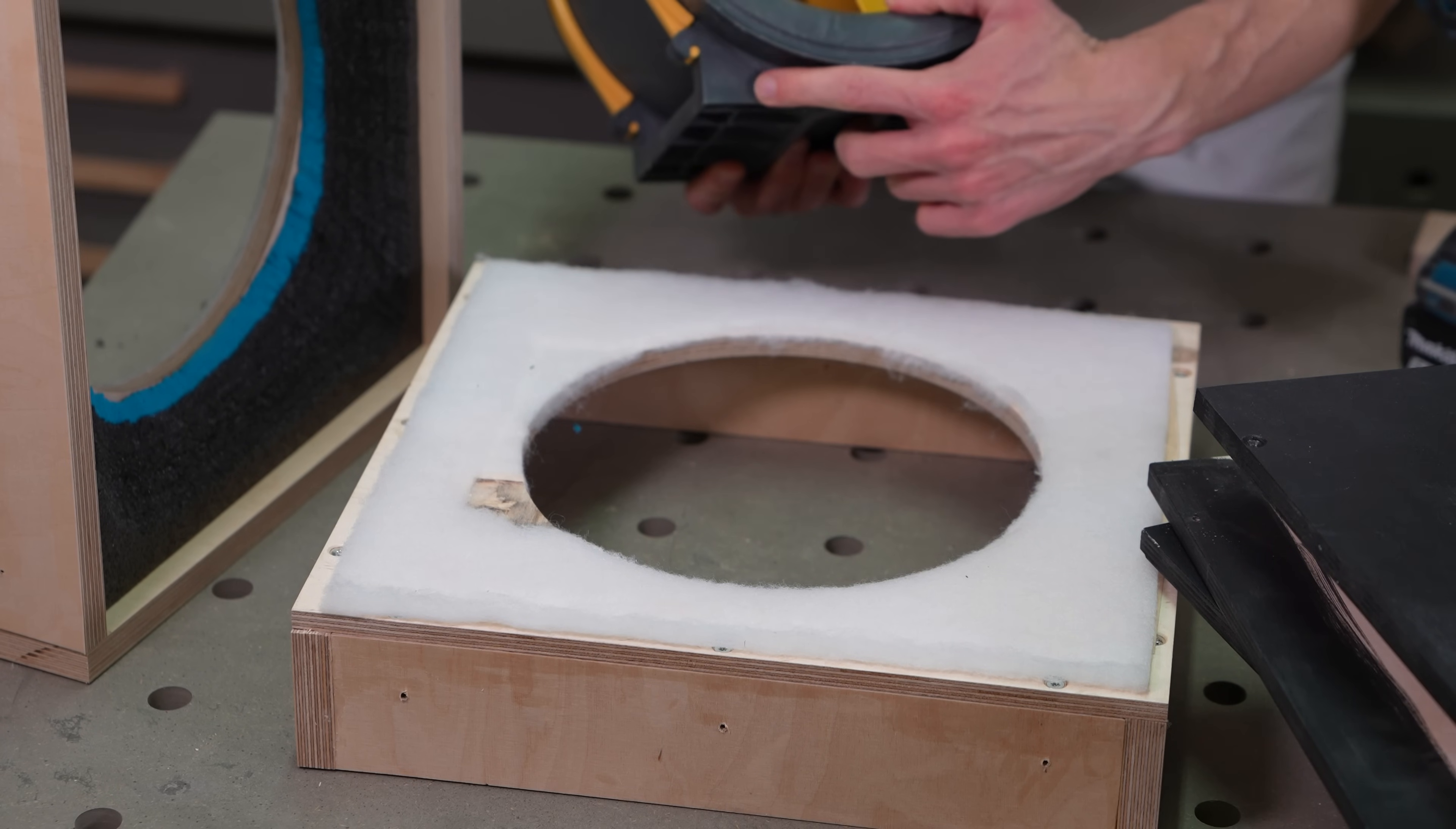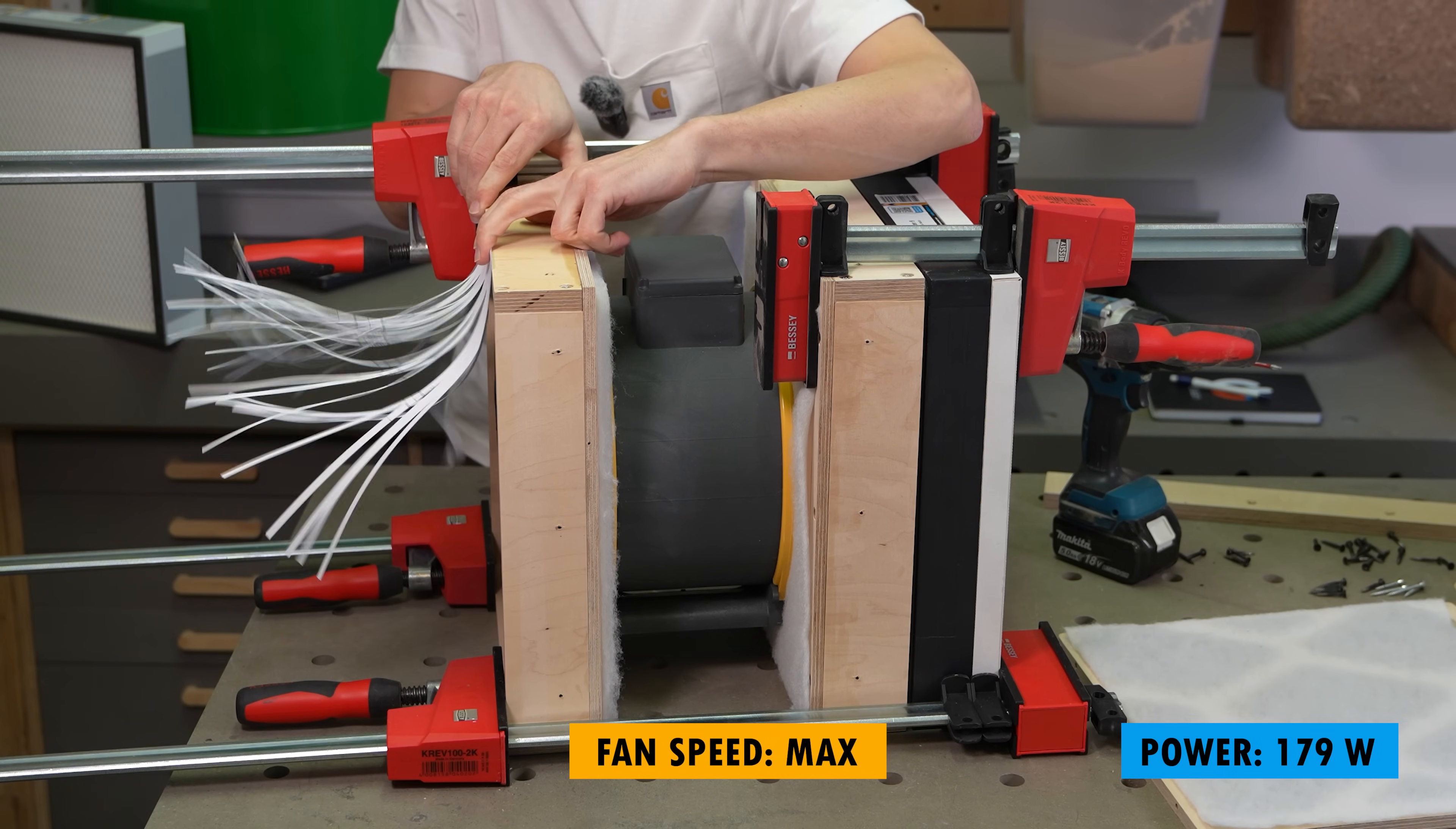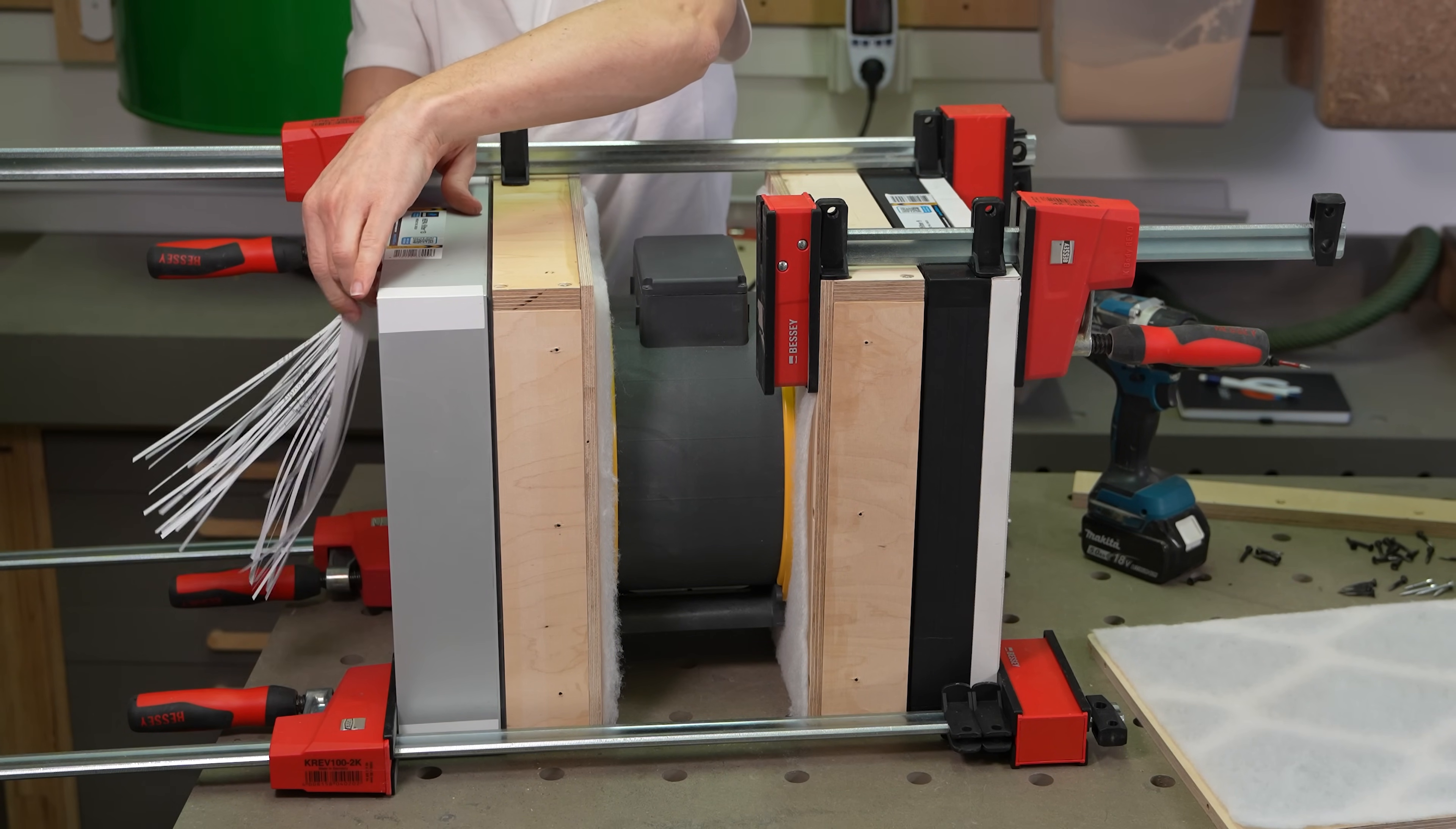I needed to remove some material for the front bracket and used my Shaper Origin to make holes that fit tightly around the fan's body. For the first test, I used long clamps to squeeze the filters together, and the HEPA filter restricted the airflow to such an extent that I had to set the fan speed to its maximum to get some airflow through the filters.